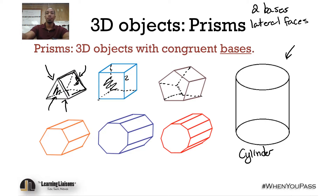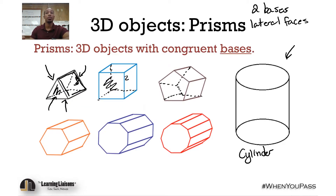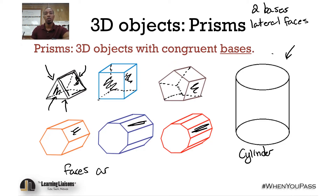Looking at a triangular prism vertically, the triangles are the bases, and then it has rectangular faces. All of these prisms have rectangular faces — all of the lateral faces are rectangles. It's important to note that the faces are rectangles when discussing prisms.